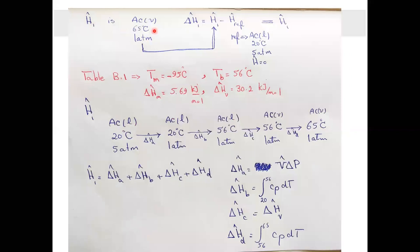For H1, the reference point is acetone liquid at 20°C and 5 atm, and the final point is acetone vapor at 65°C and 1 atm. We break the pathway into steps: first, decrease pressure from 5 to 1 atmosphere at constant temperature and liquid phase — the enthalpy change here is V·ΔP. Then increase temperature from 20°C to the boiling point of 56°C at constant pressure and liquid phase — enthalpy change is Cp·dT.